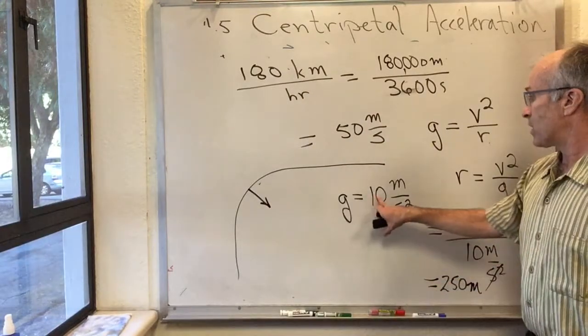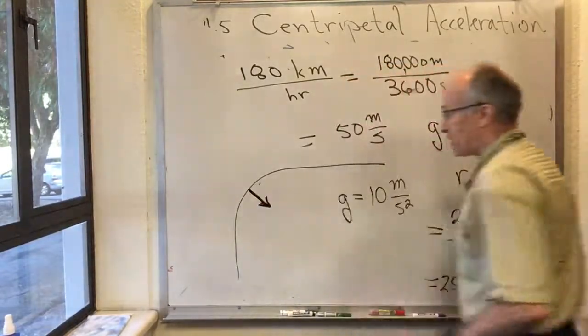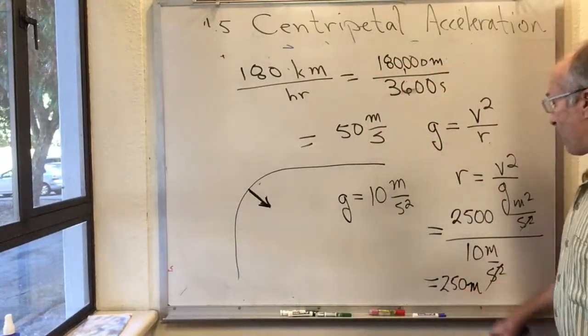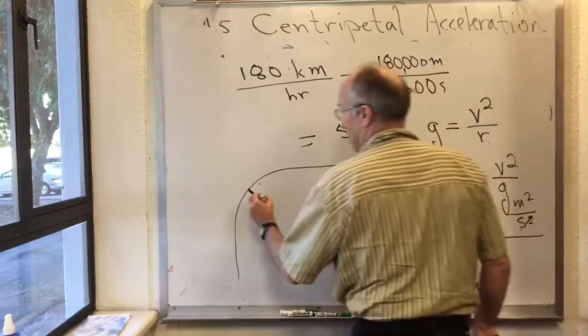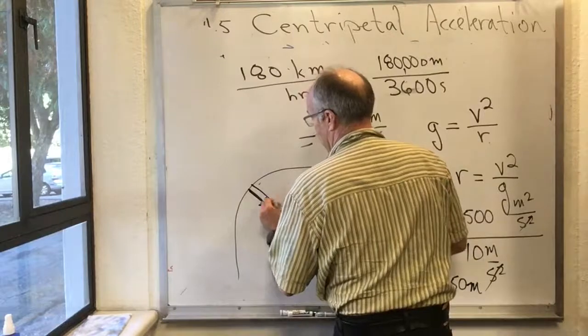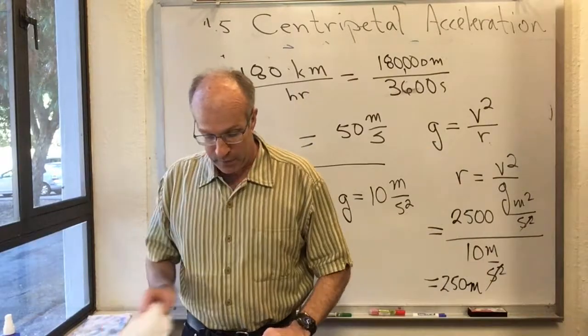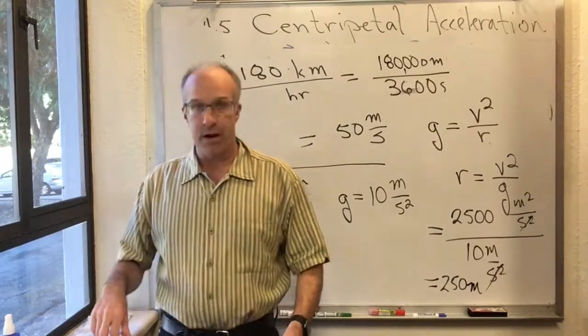So we've just learned that at 180 kilometers per hour, you experience 1g of centripetal, that's towards the center acceleration, if you're managing to make a corner that has a 250-meter radius. That's everything we need to do in night 4.5.